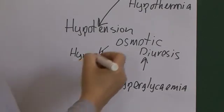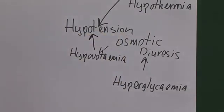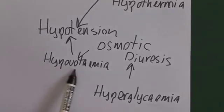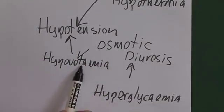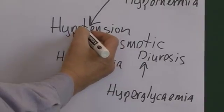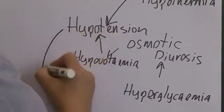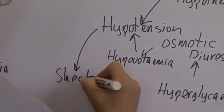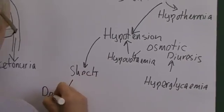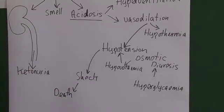And the osmotic diuresis is going to mean that the patient is dehydrated and can actually become hypovolemic. And the hypovolemia will also contribute to the hypotension. So these patients can be hypotensive because they're vasodilated and because they're hypovolemic. They're hypovolemic because they've had an osmotic diuresis secondary to the hyperglycemia, secondary to the hypoinsulinemia. And if they're hypovolemic, they can become hypotensive. And if the hypotension gets bad enough, these patients can develop shock. And shock, of course, is a life-threatening condition.